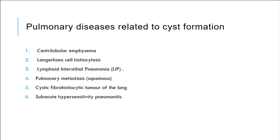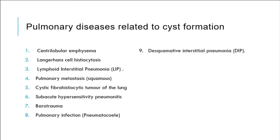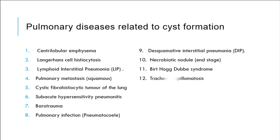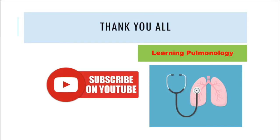Additional diseases include subacute hypersensitivity pneumonitis, barotrauma, pulmonary infection, pneumatocele, desquamative interstitial pneumonia (DIP), necrobiotic nodule, end-stage disease, Birt-Hogg-Dubé syndrome, tracheal papillomatosis, cystic mesenchymoma, and light chain diseases. Thank you all. Learning Pulmonology.